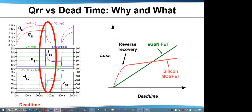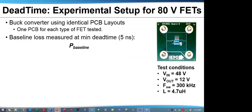How does this affect the loss? For EGAN FETs, there is no reverse recovery. Loss is linearly a function of dead time because loss is simply due to the forward voltage drop — the longer the dead time, the more energy is dissipated. With a PN body diode inside a MOSFET, there's a sharp increase in loss due to QRR that tapers off. Starting at dead time of zero nanoseconds, we can plot QRR loss of the MOSFET versus forward drop loss of the EGAN FET. At low dead times, the EGAN FET has lower losses.